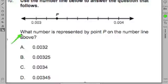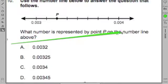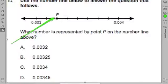Now I'm going to read the problem and see what it says. What number is represented by point P on the number line above? Guess what? It wants me to figure out what P is. It wants me to figure out what the number is or the decimal is that's represented by it.